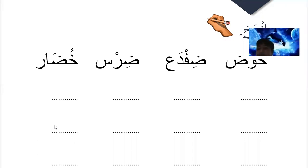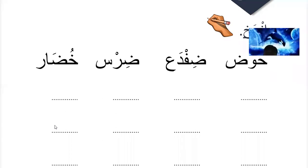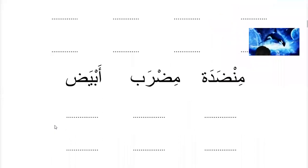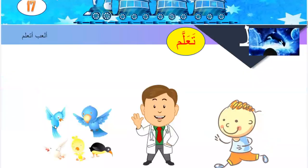Is the fish bowl good? Dhufdah is a frog - good. Then dirs is tooth - good. Khudar, khudar is probably a vegetable - good. Then midrab is probably the table - good. Midrab is the racket. Abyad is white color - yes.